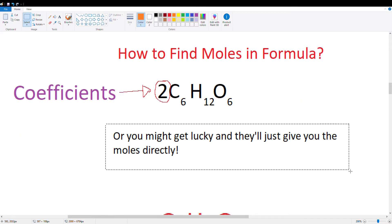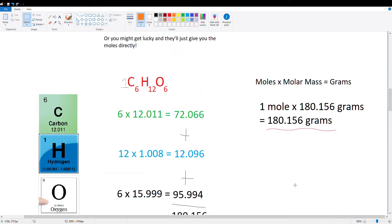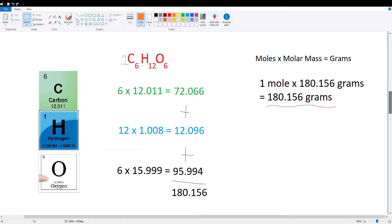And of course, you might get lucky and they'll just give you the moles directly, but it's good to know how to find the moles in the formula. So let's look at C6H12O6. So there's no number initially, but we can draw an imaginary 1, because it's naturally assumed to have a 1 there if no number is there. So that means that there's 1 mole of C6H12O6.